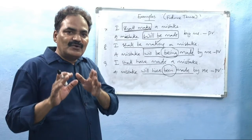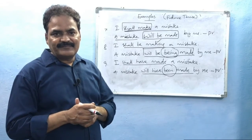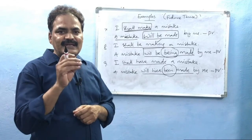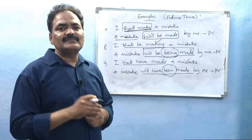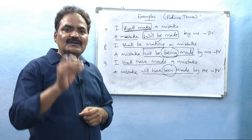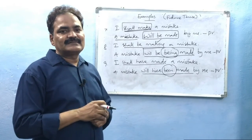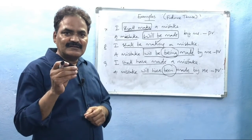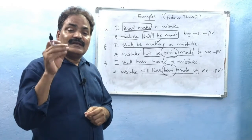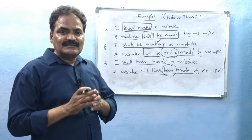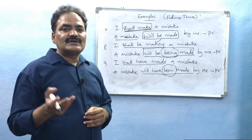Please note this very important point while changing an active voice sentence into passive voice. The major rule is: change the main verb into its past participle form along with a suitable be-form. Suppose it is in present form — take a suitable be-form in present. If it is in past form — take the be-form in past tense. If it is in perfect tense — take the be-form in perfect form. This is the major important change to observe while changing a sentence into passive voice from active voice.